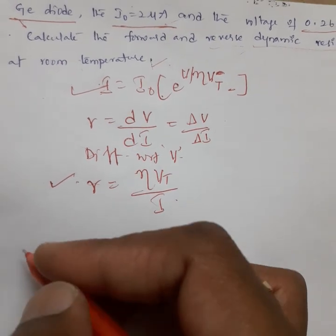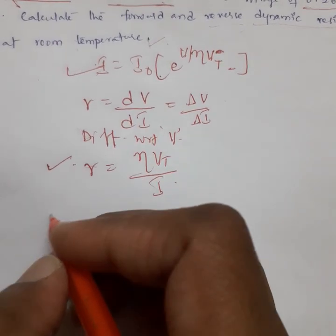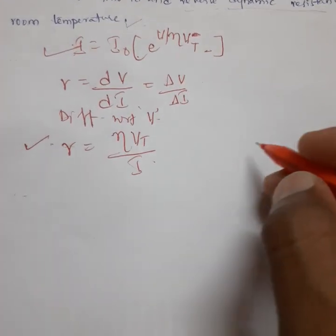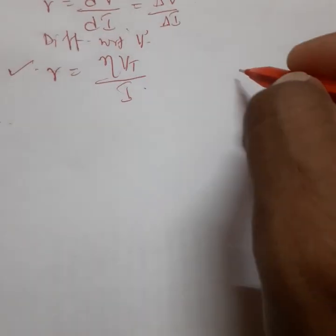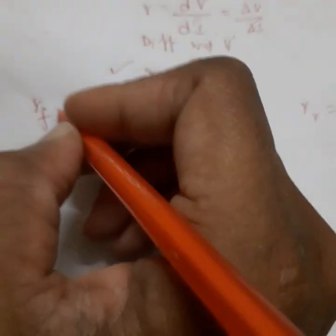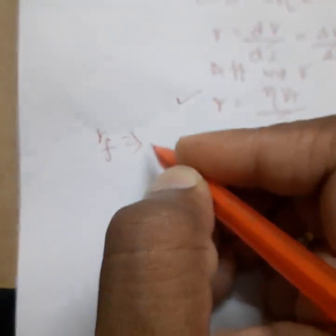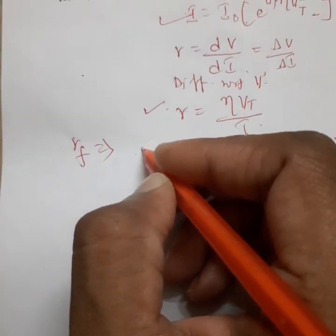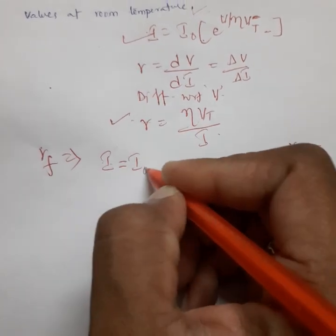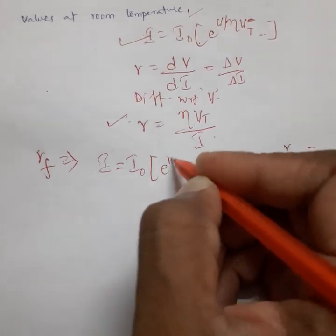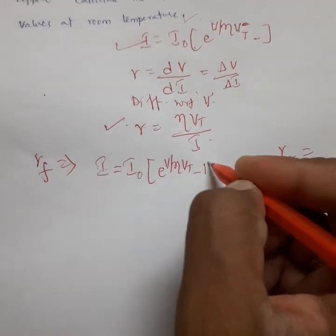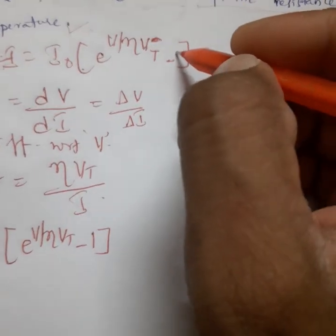The reverse dynamic resistance is computed similarly to the forward dynamic resistance. To find the forward dynamic resistance, we use the current equation: I = I₀ · e^(V / η·Vt) − 1.